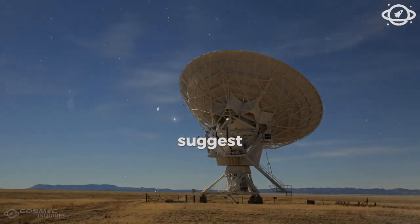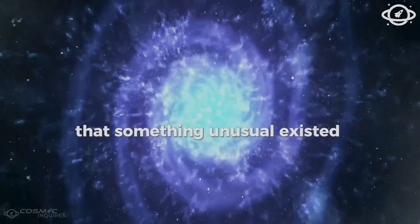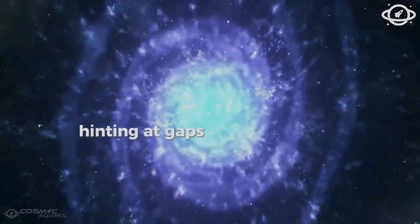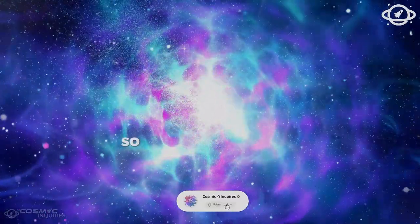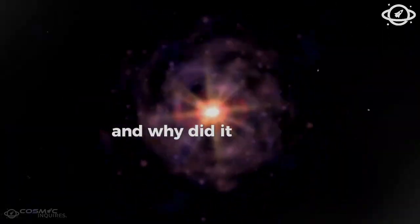The Webb Telescope's findings suggest that something unusual existed before the event, hinting at gaps in our standard cosmological models. So, what did they find, and why did it surprise astronomers?